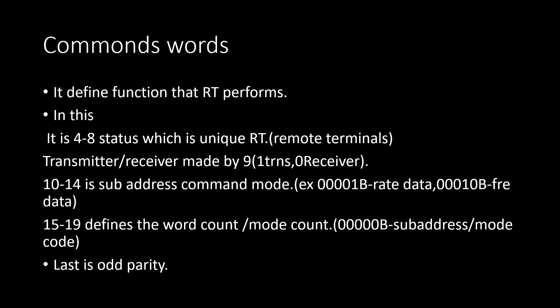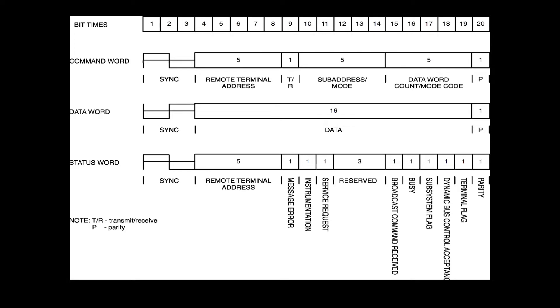Bits 10 to 14 form the sub-address command mode. For example, when it is 4, 0, 1 it defines rate data, and when it is 3, 0, 1, 0 it defines frequency data. Similarly, bits 15 to 19 define the word count mode — for example, when it has 5, 0 it is sub-address mode. The last bit is odd parity. Bits 4 to 20 are defined as command words in Military Standard 1553B.